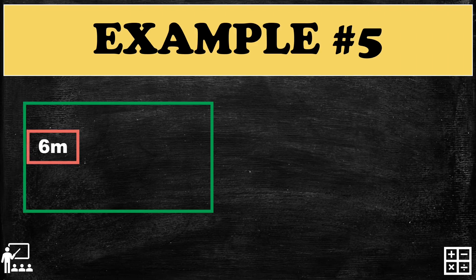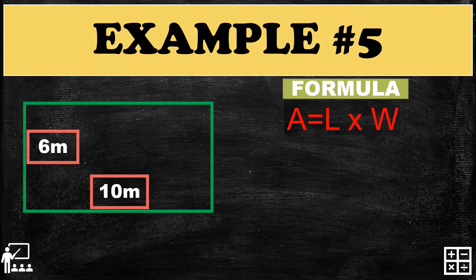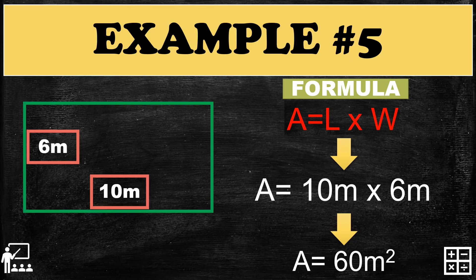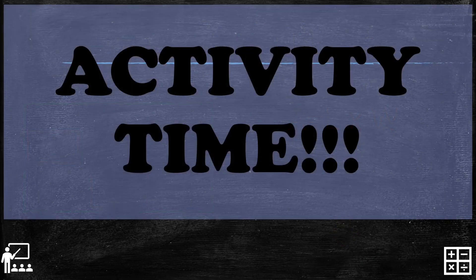Example number five: the rectangle has a width of six meters and a length of ten meters. Using the formula and substituting the values, the answer for this rectangle is sixty meters squared. Remember to use the proper units.